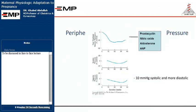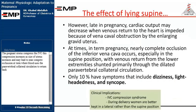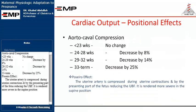The pregnant uterus compresses the IVC, and this compression increases as the size of the uterus increases, potentially leading to near-complete occlusion at term, where blood uses the paravertebral collateral circulation to return. Regarding aortocaval compression: at 23 weeks there is no change; at 24–28 weeks, decrease by 8%; at 29–32 weeks, decrease by 14%; and at 33 weeks to term, decrease by 25%.